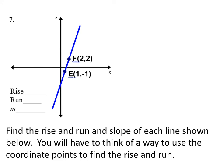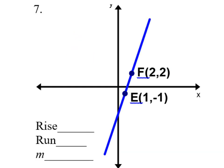Take a minute and try number seven with your neighbor — find the rise, run, and slope. We shouldn't need grid lines or even a graph anymore, as long as they give us the two points. For the rise, I take the y values, which are two and negative one, and find the distance by subtracting — two minus negative one is the same as two plus one, which is three. For the run, I take the x values and subtract: two minus one is one. So the slope is three divided by one, which is three.